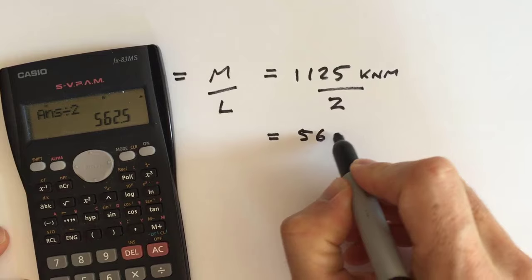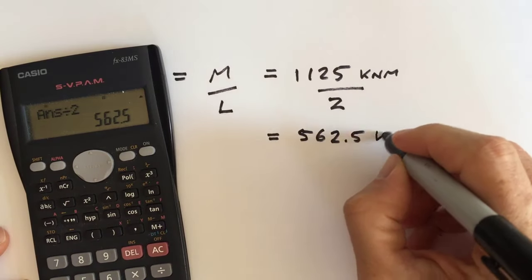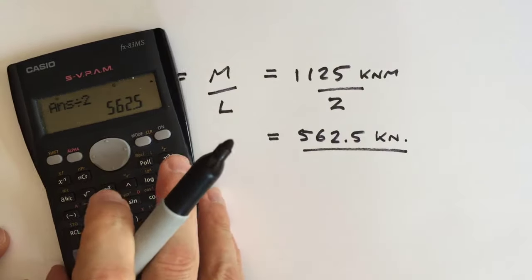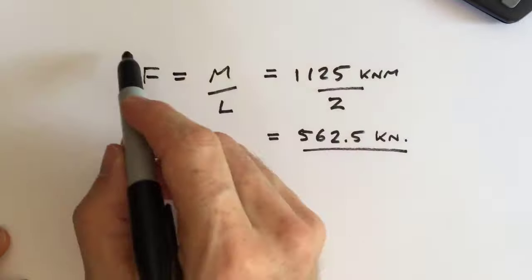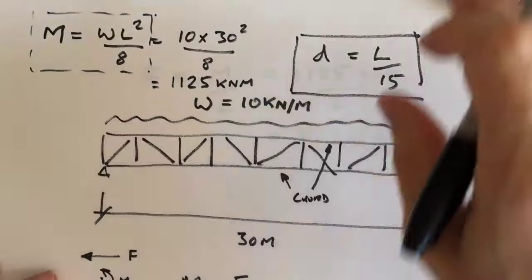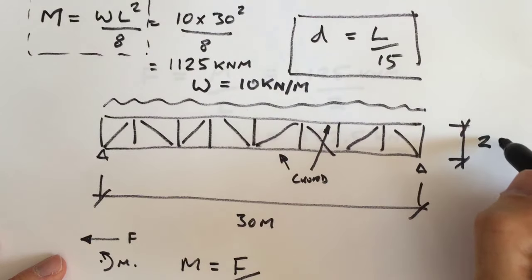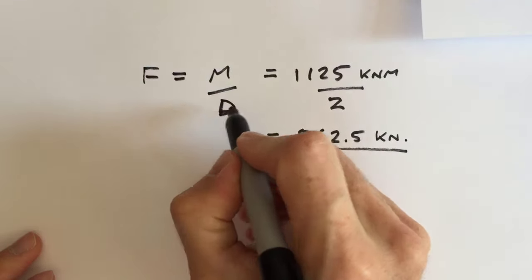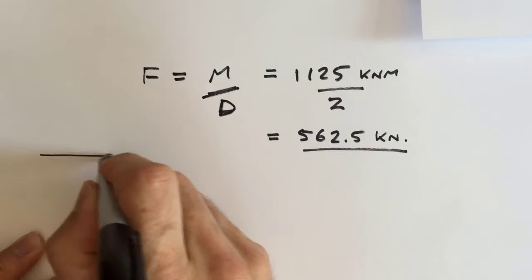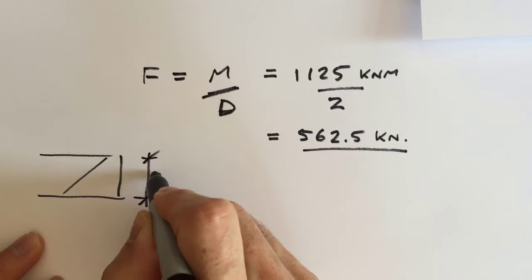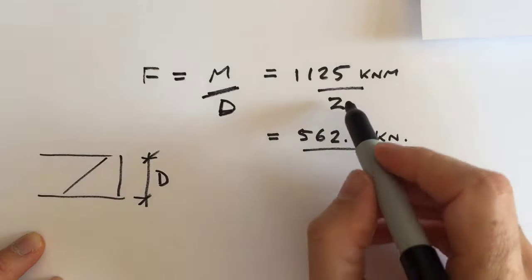So we have 562 and a half kilonewtons of axial load in the top and bottom chord. I'll just clarify that the figure we're talking about is this here. So in fact, we'll call that D. M over D, where the depth is that there, the depth between the chords, which is 2 metres.